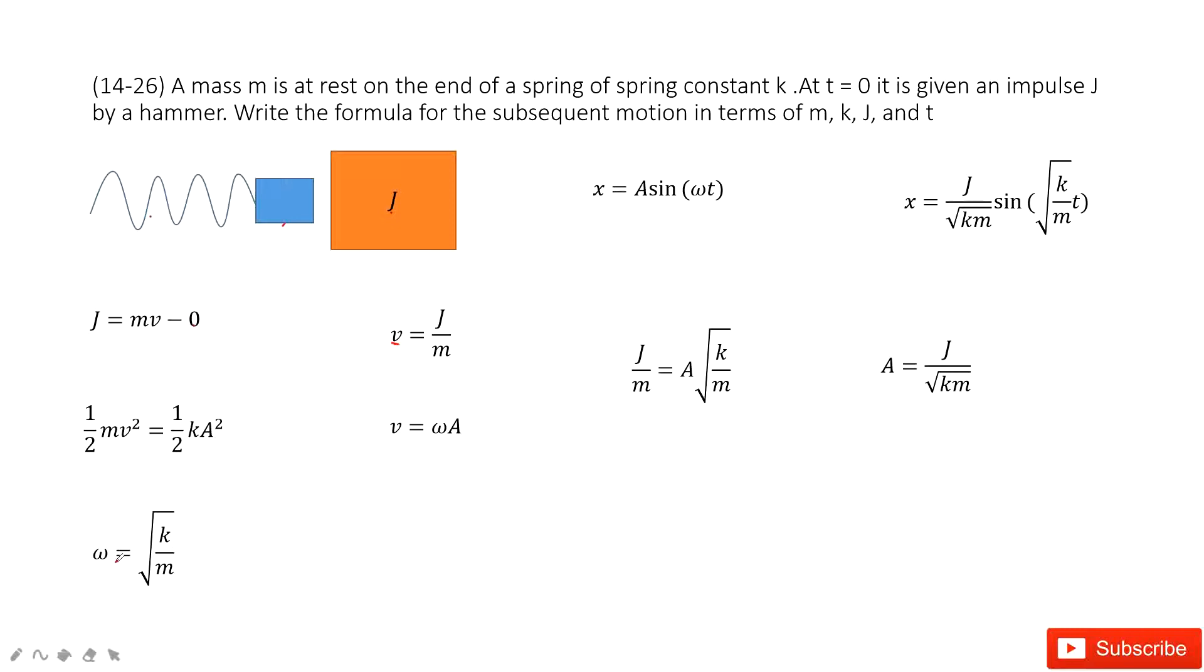We also know for simple harmonic oscillations, omega equals square root of k over m. From the energy equation, we can get v equals omega times A. So v equals square root of k over m times A. We can express this using omega.